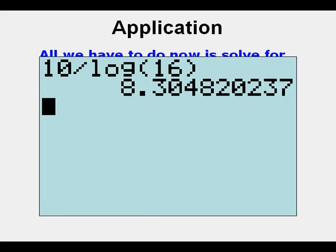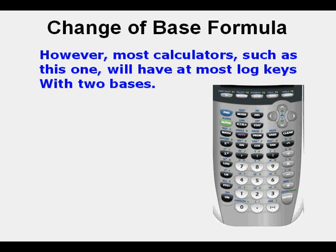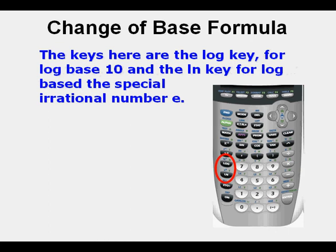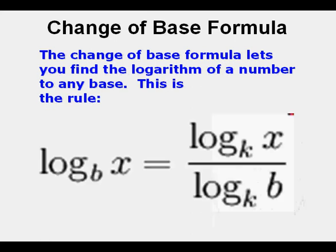We can have the base of a logarithm be any positive number. However, most calculators will have at most two log keys: the log key for log base 10, and the ln key for the natural log based on the special irrational number e. The change of base formula lets you find the logarithm of a number to any base. The rule is: log base b of x equals log base k of x divided by log base k of b, where k is any other base.